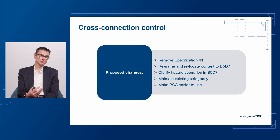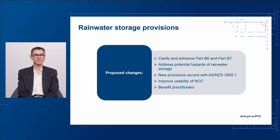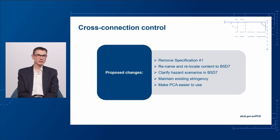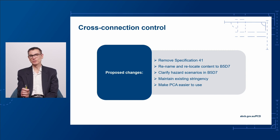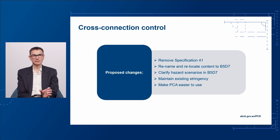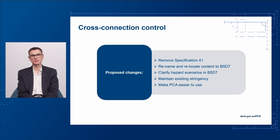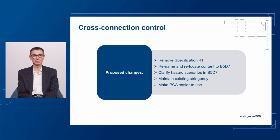Stakeholders told us this relocation would make it easier to use, not being so distant from the relevant provisions in Part B5. These clarification amendments aren't increasing stringency — it's about making the PCA easier to use. Also in B5D6, you'll find another change related to rainwater. Where B5D6 currently refers you to the 2018 edition of AS 3500 Part 1 to show hazard scenarios for various rainwater tanks, we've actually pulled those hazard scenarios into the NCC itself. Have a look at B5D6 and how those hazard scenarios have been relocated into the Plumbing Code of Australia.